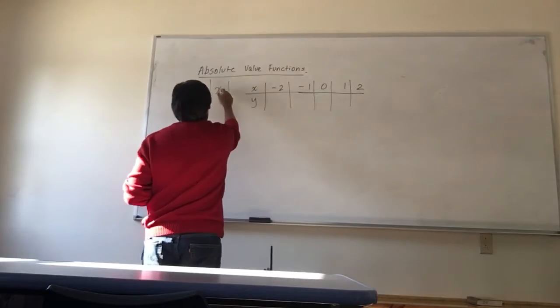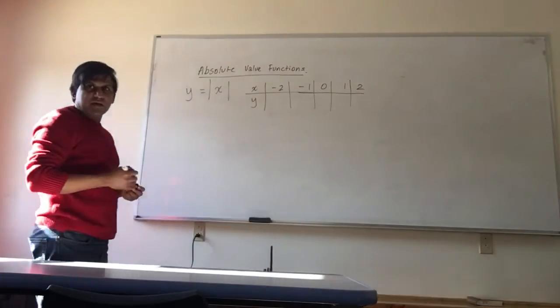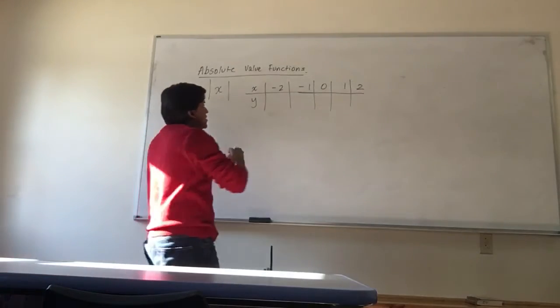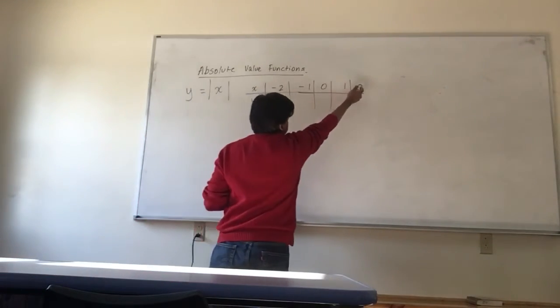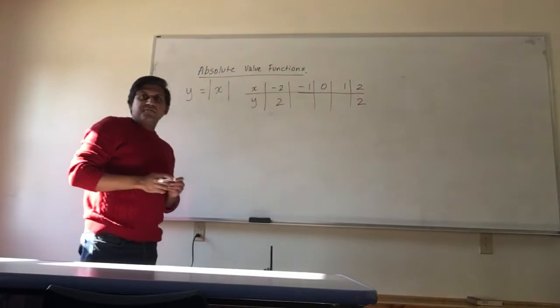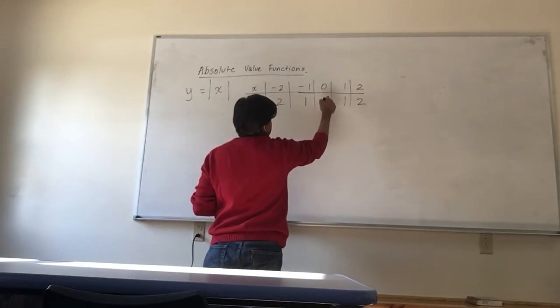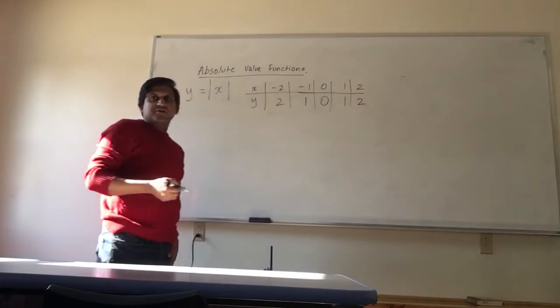So if I were to put in negative 2, what does that mean? How far is negative 2 from 0? It's 2 units away. And how far is positive 2 from 0? It's 2 units away. Similarly, negative 1 is 1 unit and 1 unit, and 0 units is 0 units away.